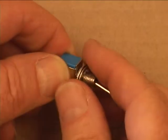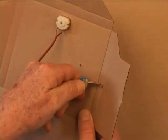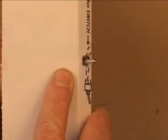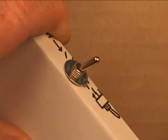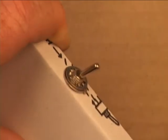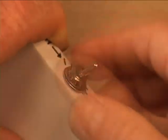Remove the nut and washers from the switch and push the switch through the hole on the side of the box. Replace the washers and the nut and then tighten securely with needle-nose pliers.